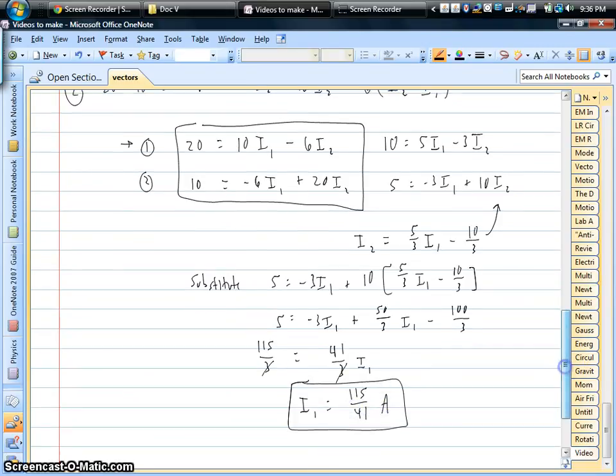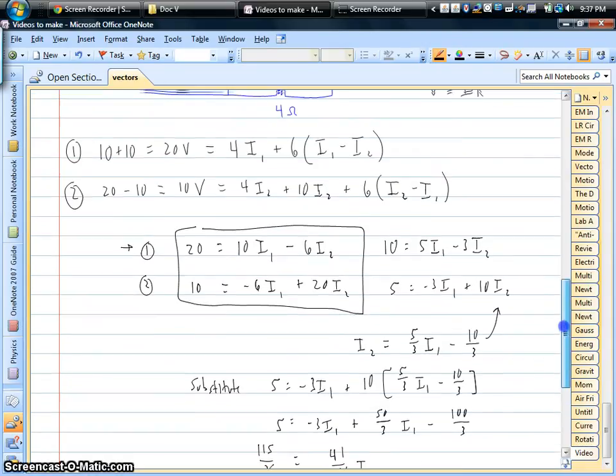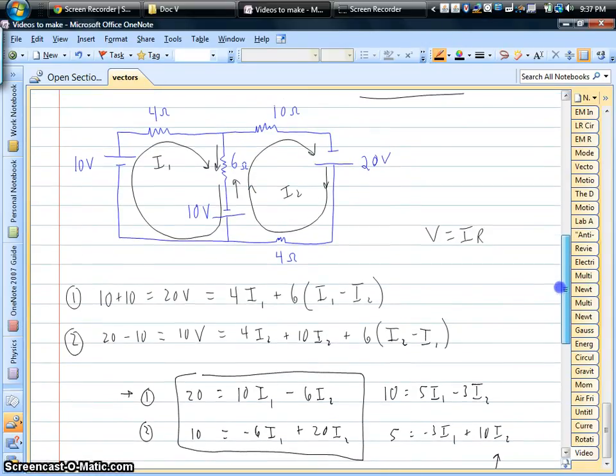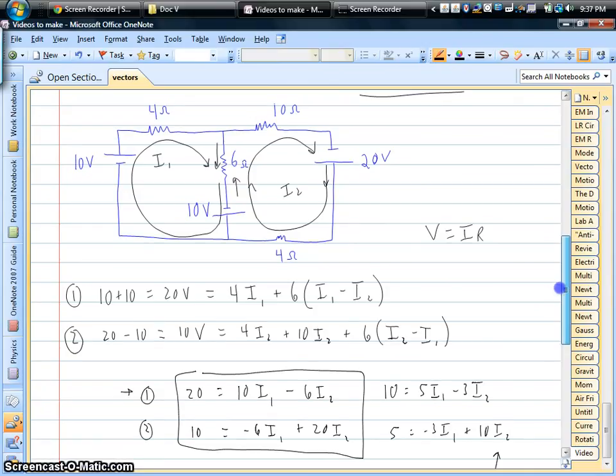Okay, like I always, it seems like we get very strange fractions when we're dealing with circuits. But the point is, you get a positive answer. That's good. That means that we guessed I1 going the right direction. Okay, on the left-hand loop, I1 is really going clockwise.